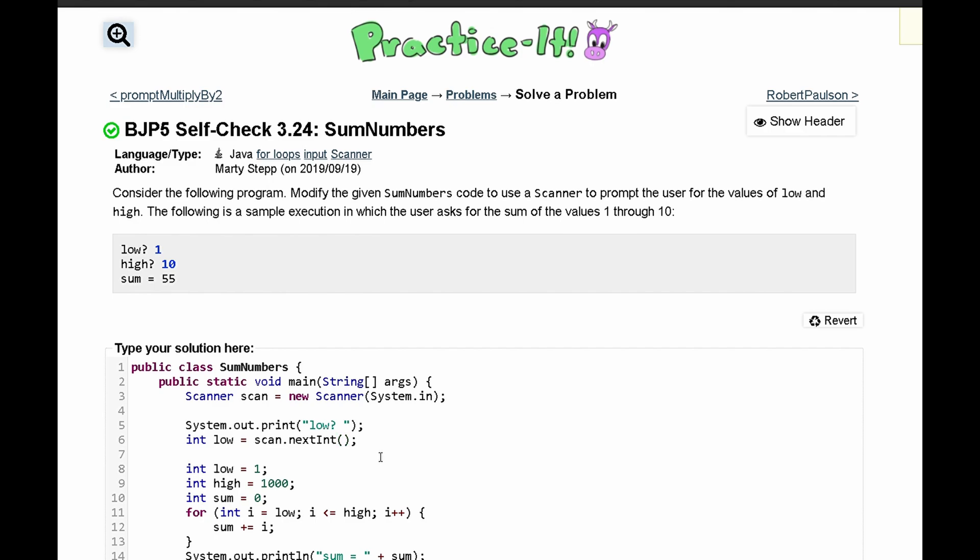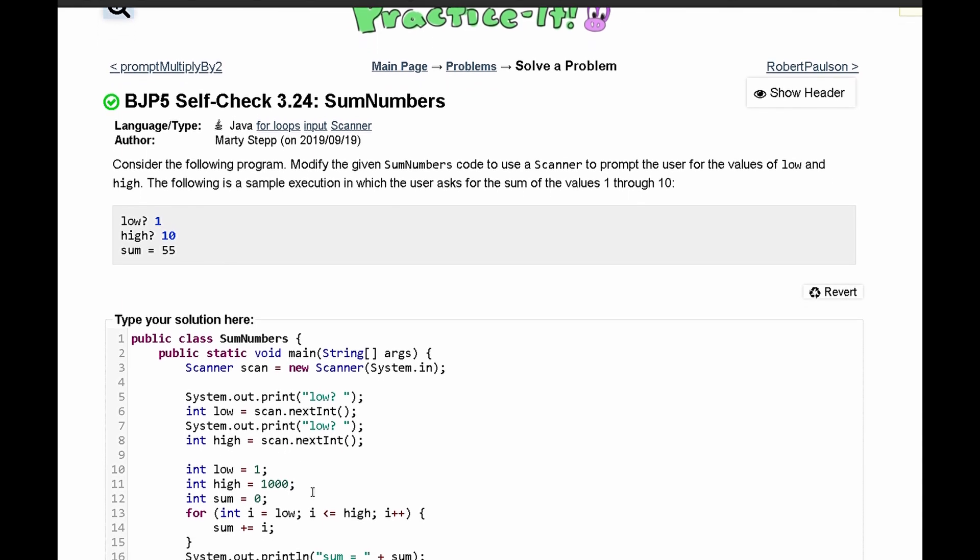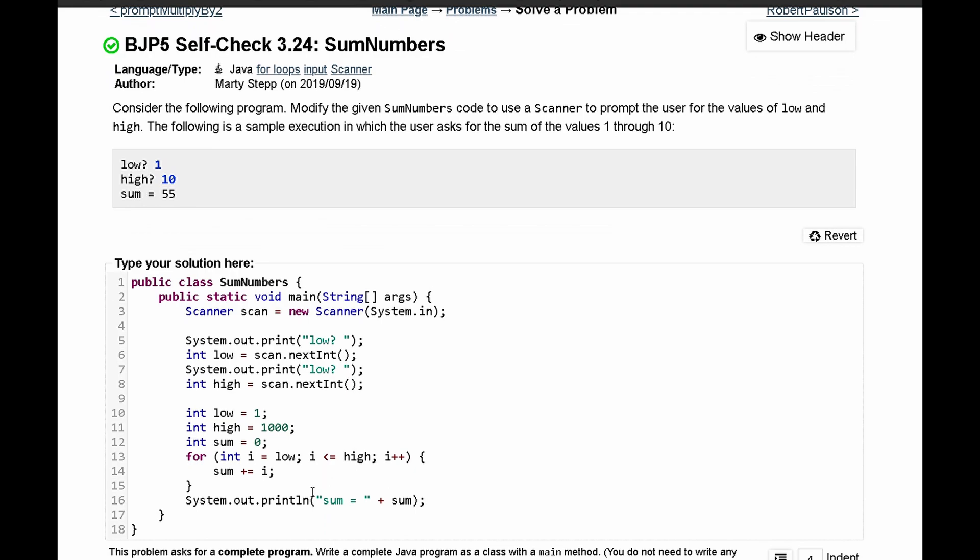We'll have this same thing but for high, so right below it we'll have int high and that will be equal to scan.nextInt. Once we have those, we can move on and actually get rid of this since we're storing low and high.